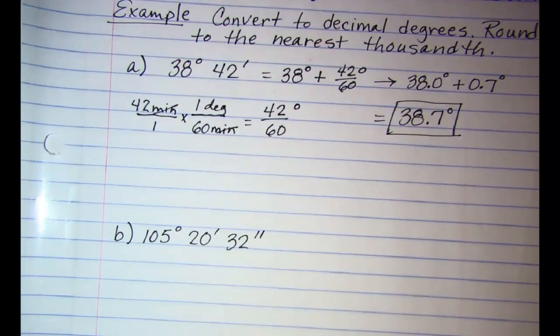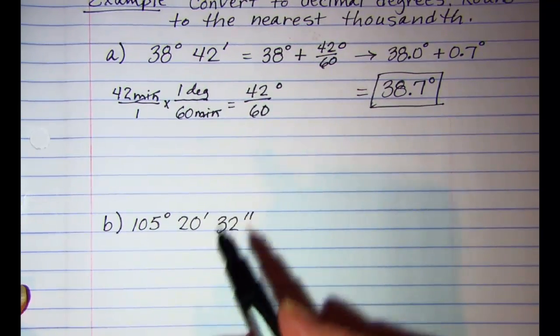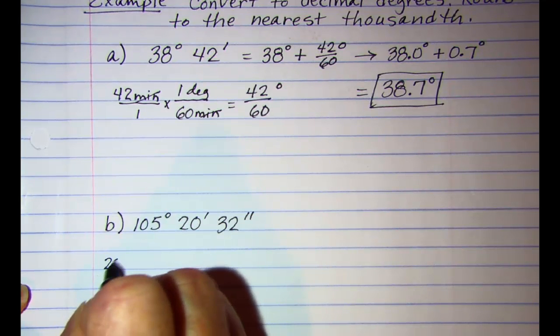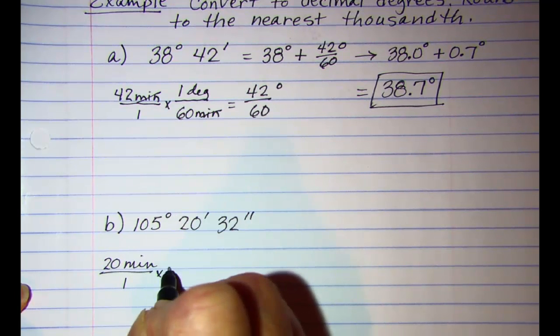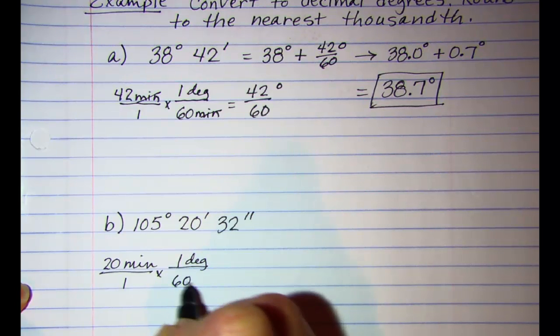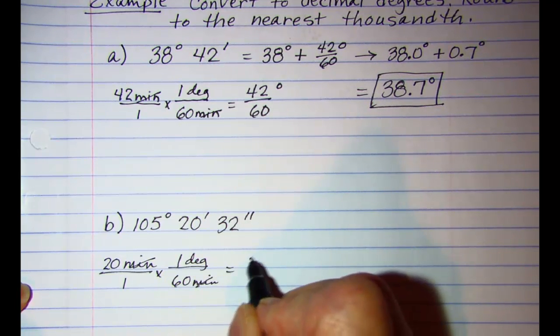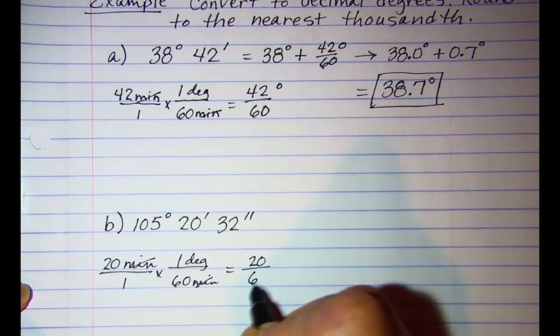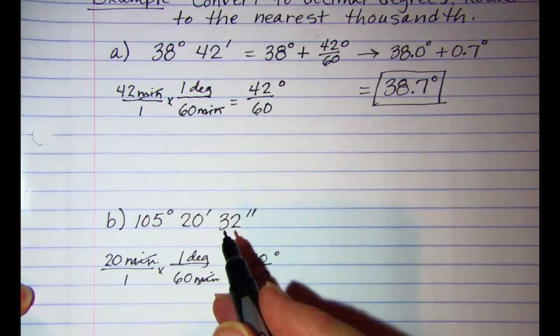Another example. We'll do the same thing with our unit multipliers on this one. 20 minutes and we know that one degree is 60 minutes. So 20 minutes is 20 sixtieths of a degree.